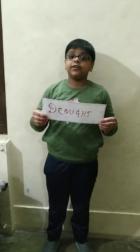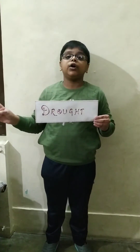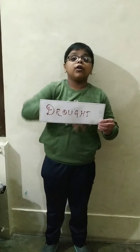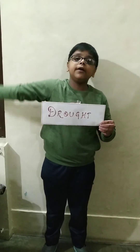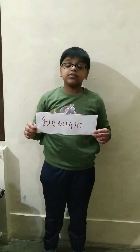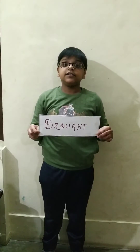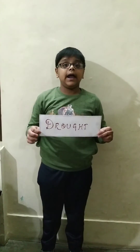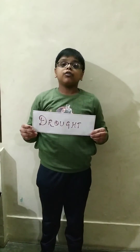Drought occurs when there is no water for a long period of time. Rivers, lakes and wells dry up and crops are damaged.